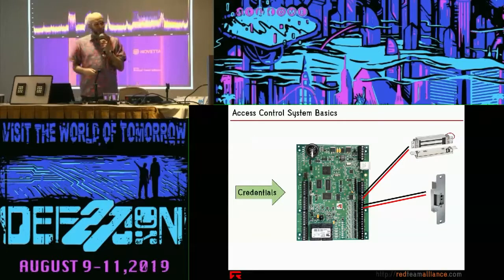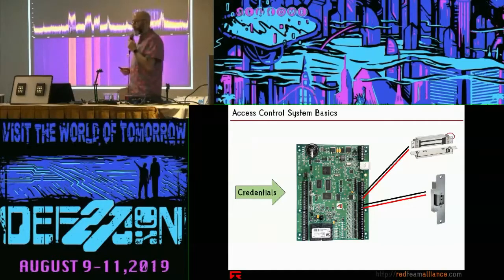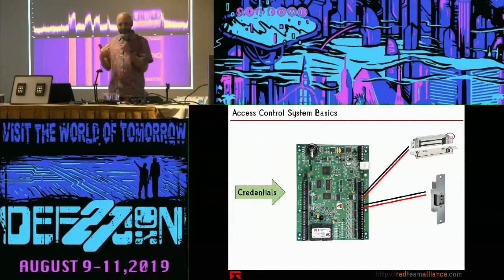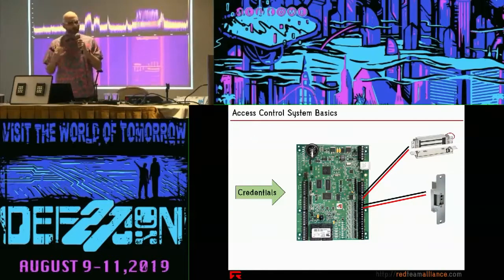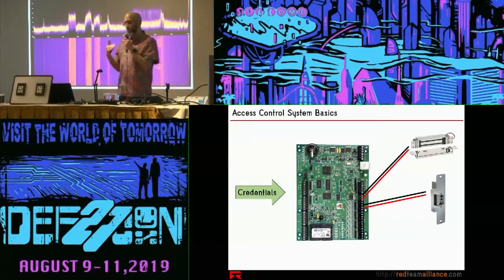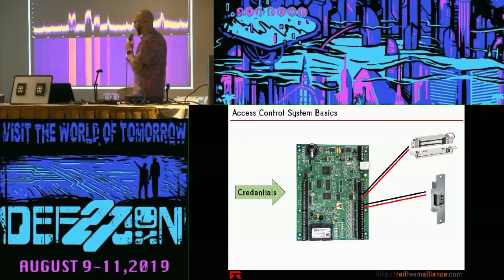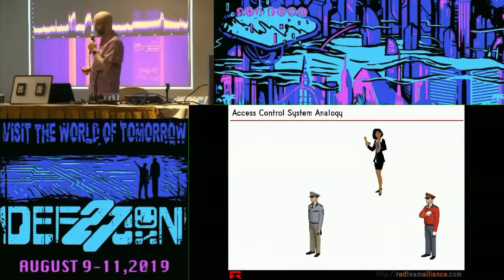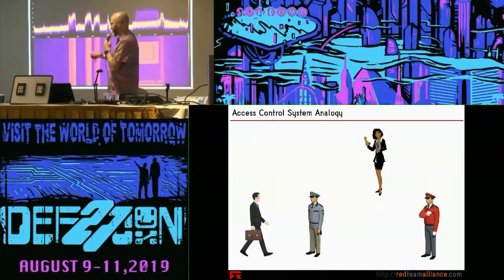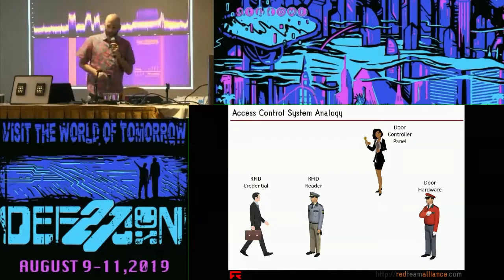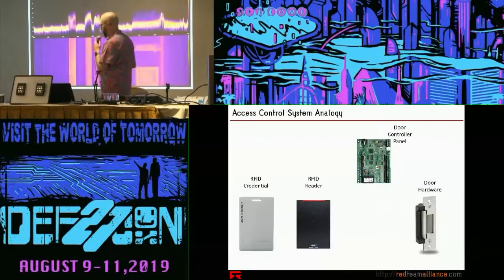The most common type of input into a door controller is credentials, of course. I like to use analogies because it demystifies how opaque some of this technology is. So we're going to anthropomorphize the access control system. Here are our players: we have our RFID credential — his name is Alberto — our RFID reader as a security guard, the door controller panel as the executive manager, and our electrified strike played by the door hardware.